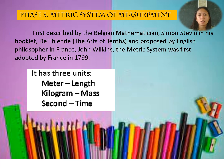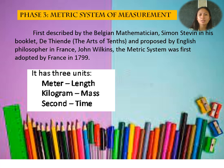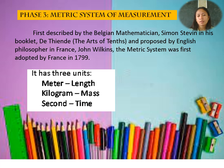Phase 3: The metric system of measurement. The English system of measurement was widely used until the 1800s and 1900s, when the metric system started to gain ground and became the most used system of measurement worldwide. This system was first discovered by Belgian mathematician Simon Stevin in his booklet, The Art of Tenths, and was proposed by English philosopher John Wilkins. The metric system was first adopted in France in the year 1799. The three base units are: meter for length, kilogram for mass, and second for time.